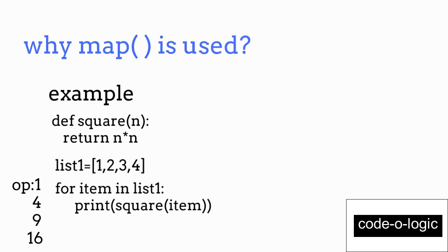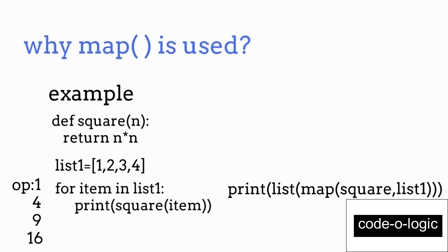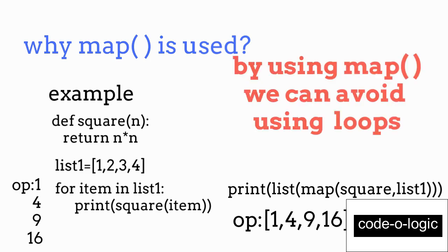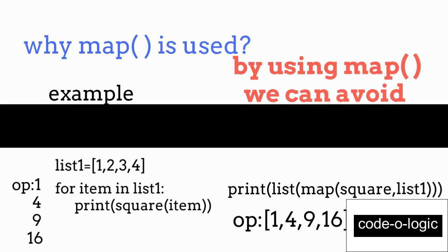We can get the same output using the map function too. Inside the parenthesis, we specify the name of the function and the iterable, which is 'list one' here. Since we are converting to a list, we use list typecasting and print the output using the print function. By using the map function, we can avoid using loops and our code is also more Pythonic.